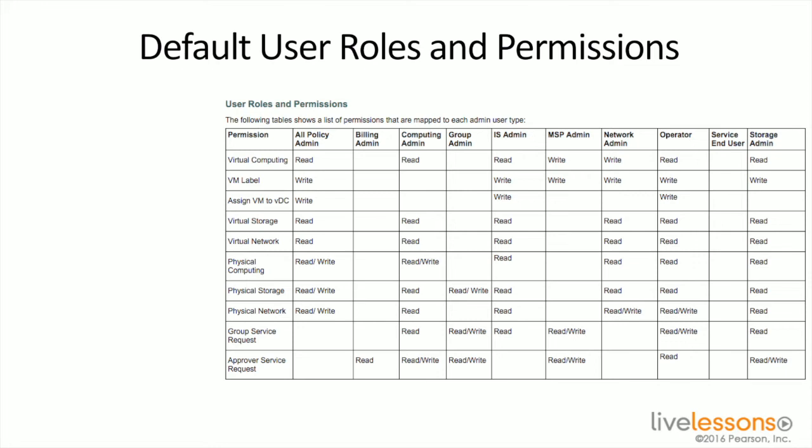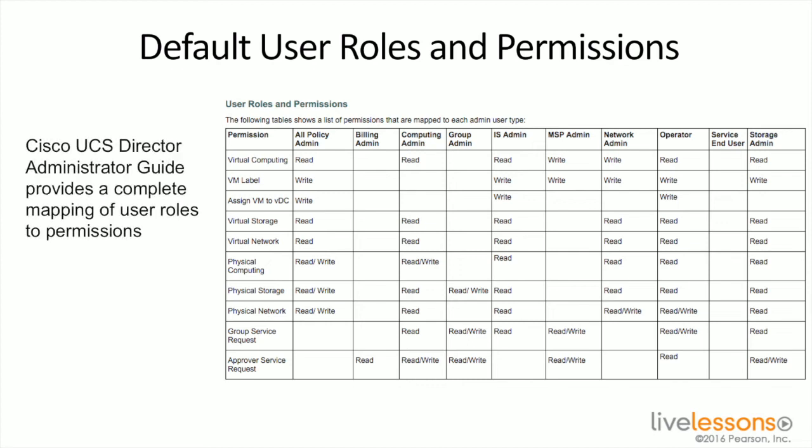There are a number of default roles and permissions in UCS Director. For each of the 11 default roles, there are different combinations of privileges. Rather than going through all of them here, I'd point you to the UCS Director documentation — the administration guide walks through all of these in great detail, showing the default privileges based on the role and what that user would be able to do.